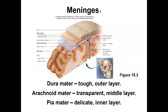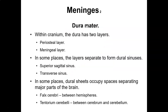Your meninges — you have the dura mater, the arachnoid mater, and the pia mater. The dura mater is the tough outer layer, the arachnoid mater is the transparent middle layer, and the pia mater is the delicate inner layer. The dura has two layers: periosteal and meningeal. You've heard of meningitis — that's inflammation of this layer. In some places the layers separate to form dural sinuses such as the superior sagittal sinus and transverse sinus.